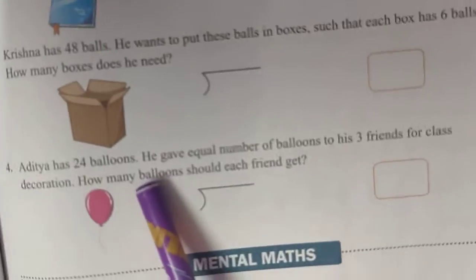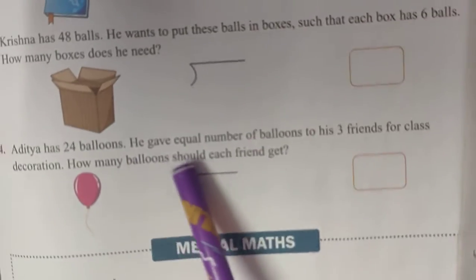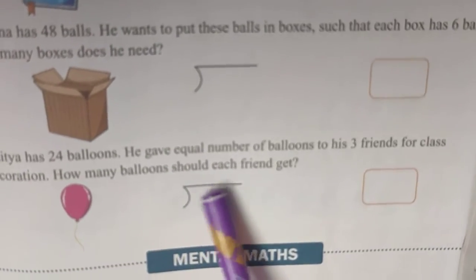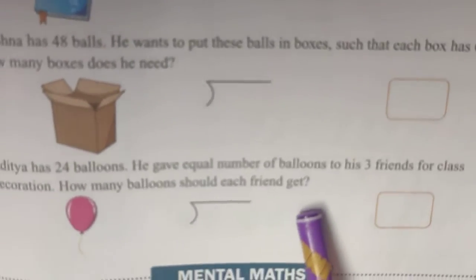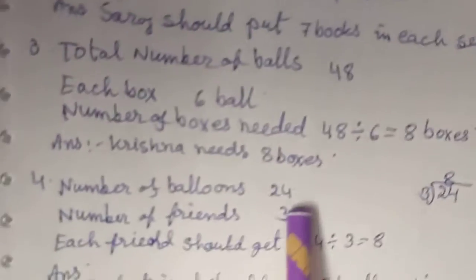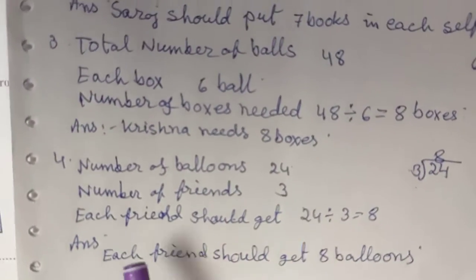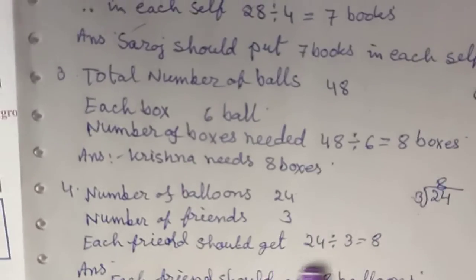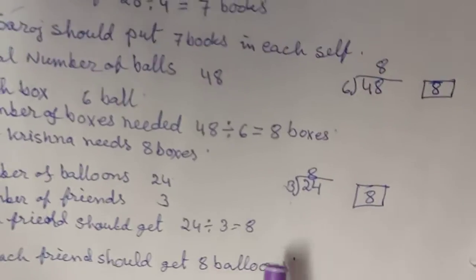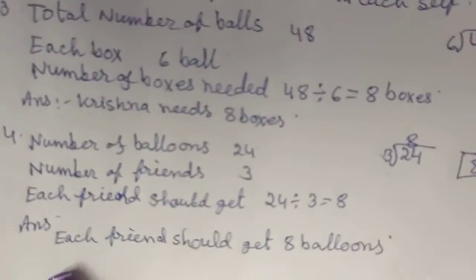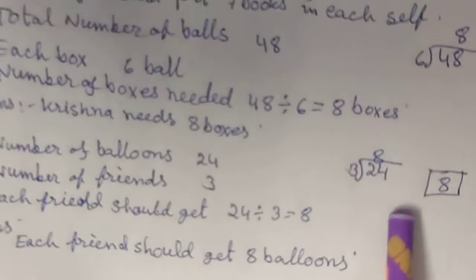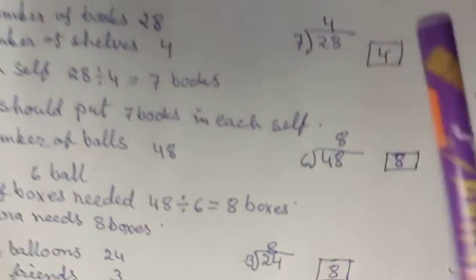Aditya has 24 balloons. He gave equal number of balloons to his 3 friends for class decoration. How many balloons should each friend get? Number of balloons is 24, number of friends is 3. Each friend should get 24 divided by 3 is equal to 8. Each friend should get 8 balloons. Here also do this one yourself.